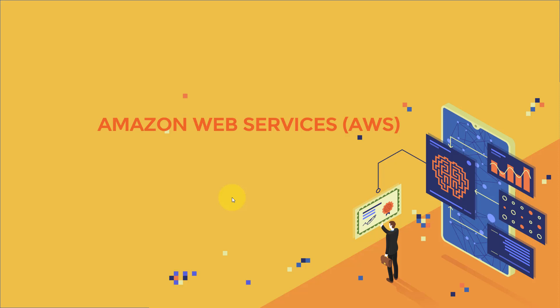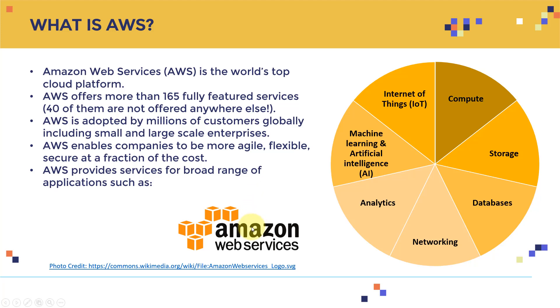What is Amazon Web Services? I'm assuming that most of you guys have at least basic knowledge or expertise with AWS or one of their certifications, and have basic knowledge as well of AI and machine learning. I'm just going to give you a quick overview just in case you're not familiar with it. So what is AWS? Amazon Web Services, or AWS, is the world's top cloud platform. AWS offers more than 165 fully featured services, and 40 of them are not offered anywhere else — especially when it comes to machine learning, you will find a ton of features, a ton of services.